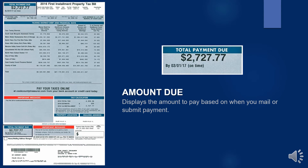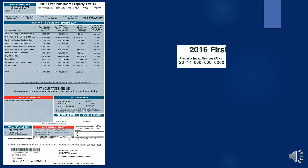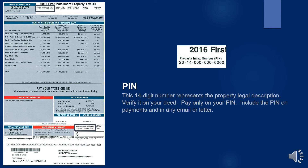The amount due displays the amount to pay based on when you mail or submit payment. This 14-digit property index number represents the property legal description. Verify it on your deed. Pay only on your PIN, and include the PIN on payments and any correspondence.